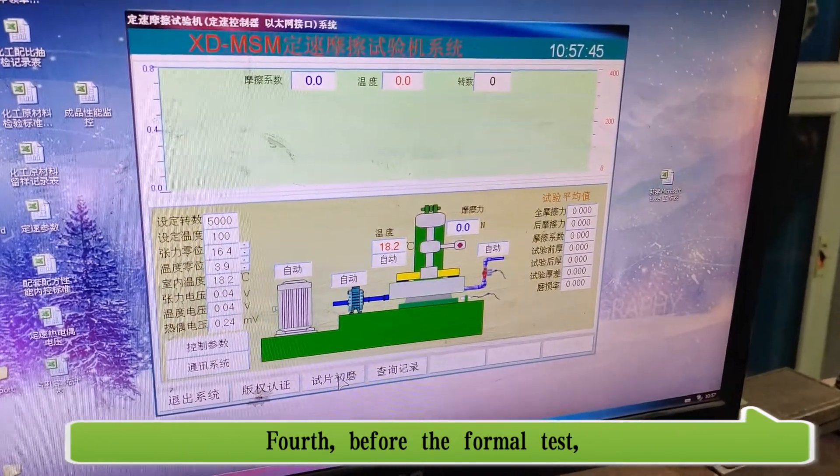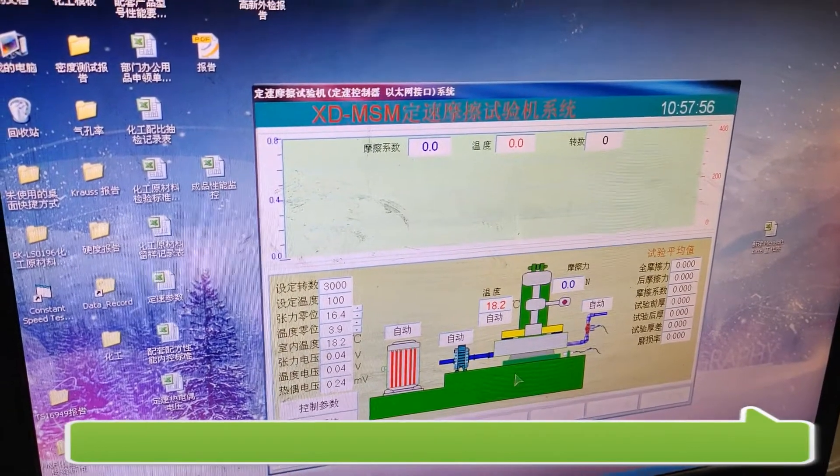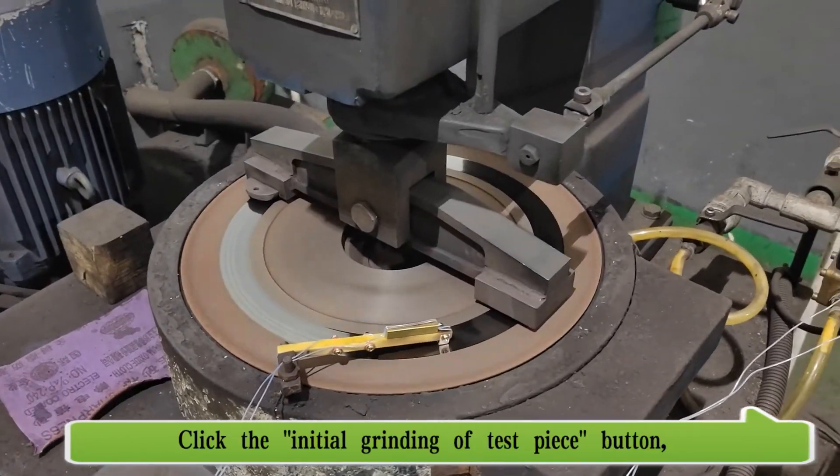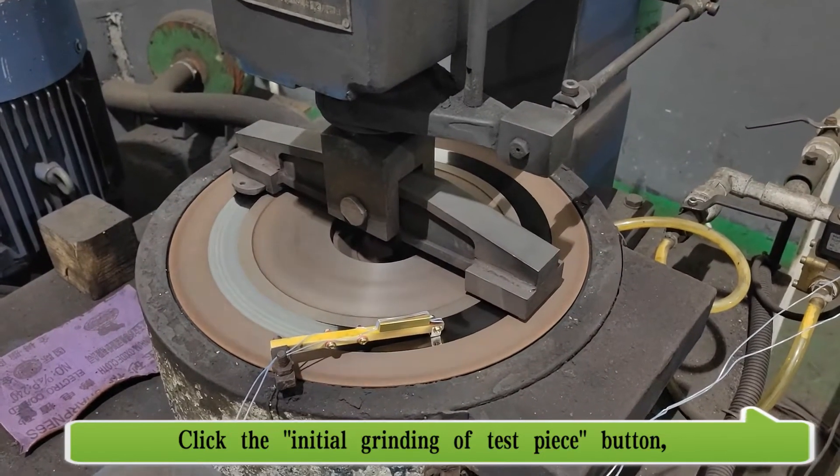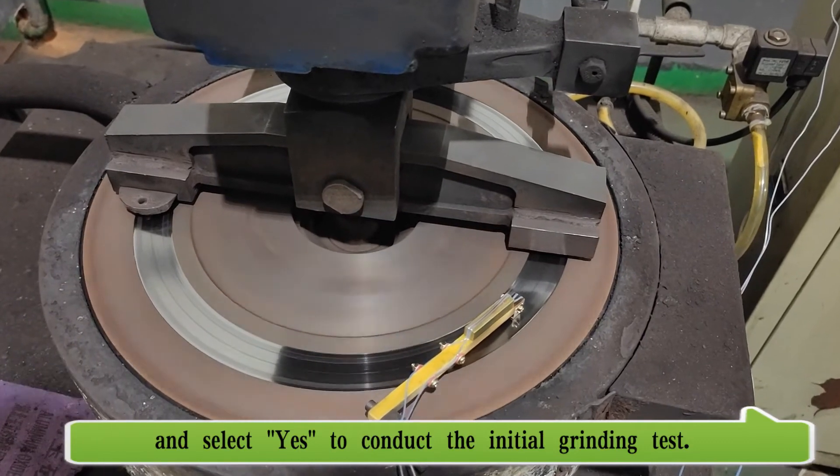Fourth, before the formal test, two initial grinding tests need to be carried out, each lasting about 6 minutes. Click the initial grinding of test piece button and select yes to conduct the initial grinding test.